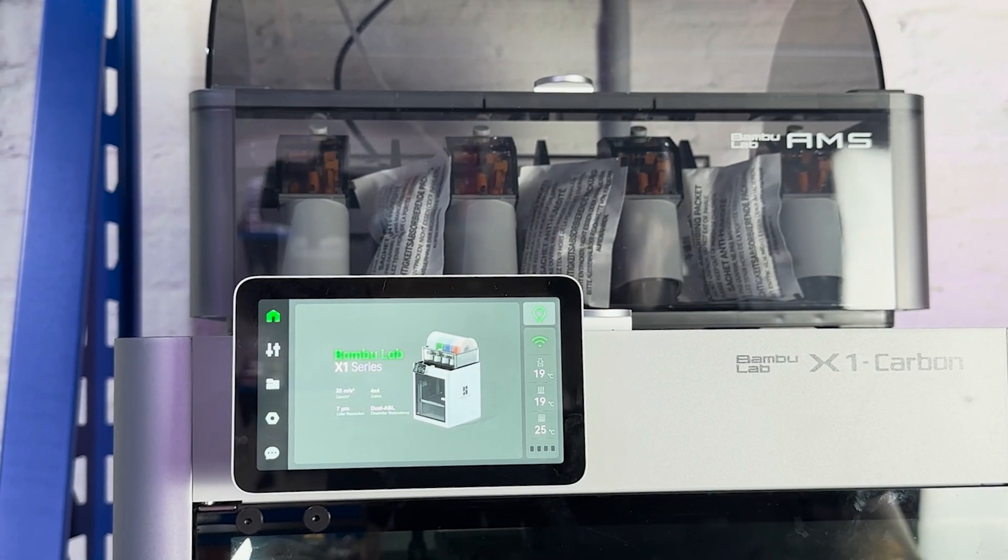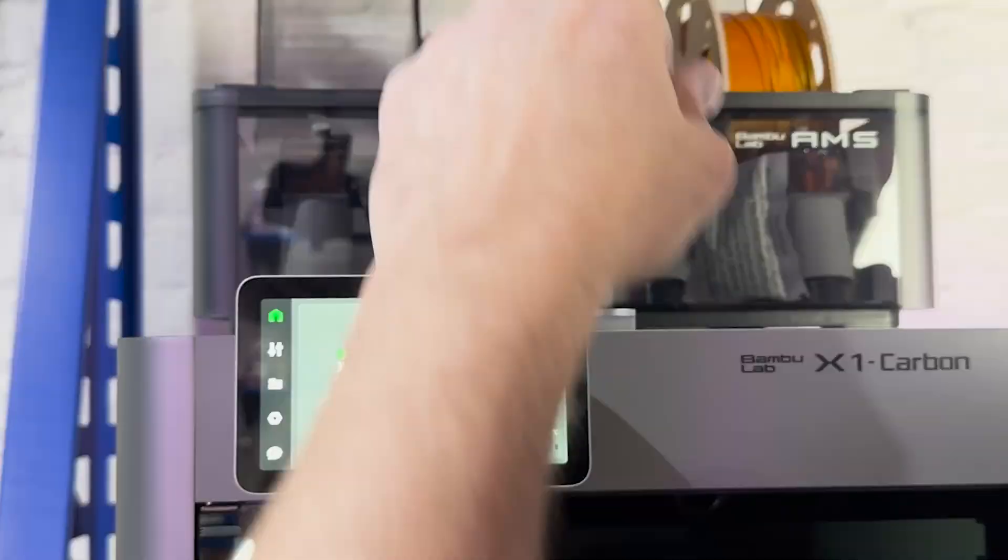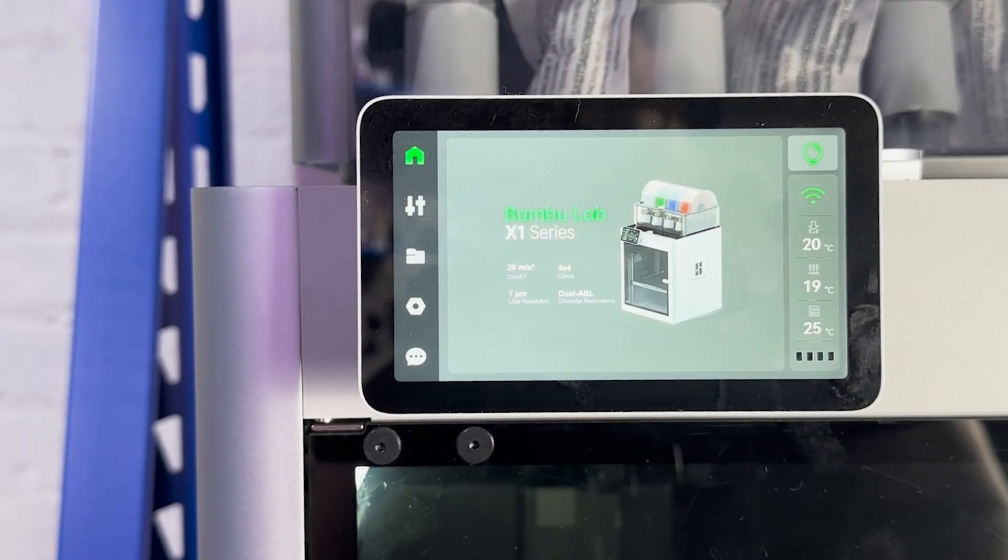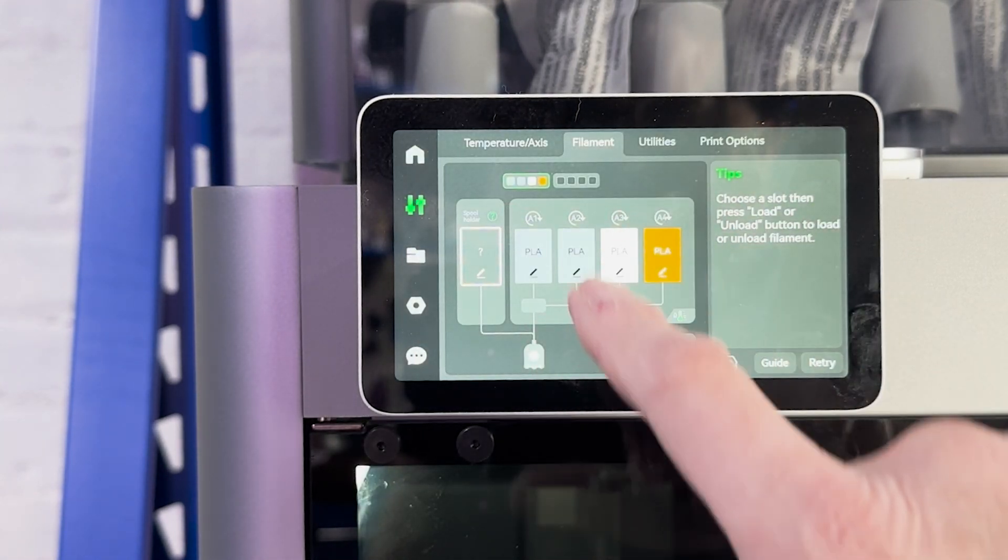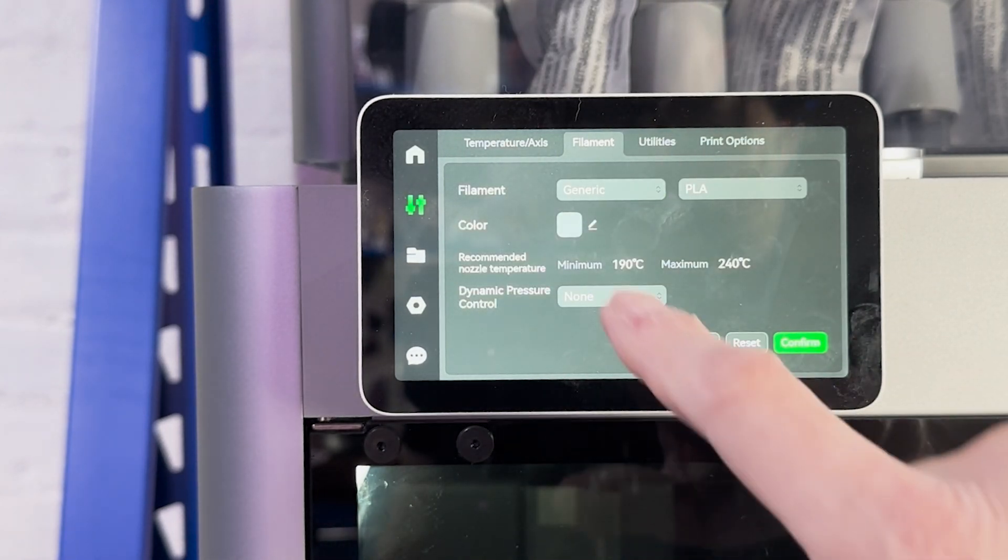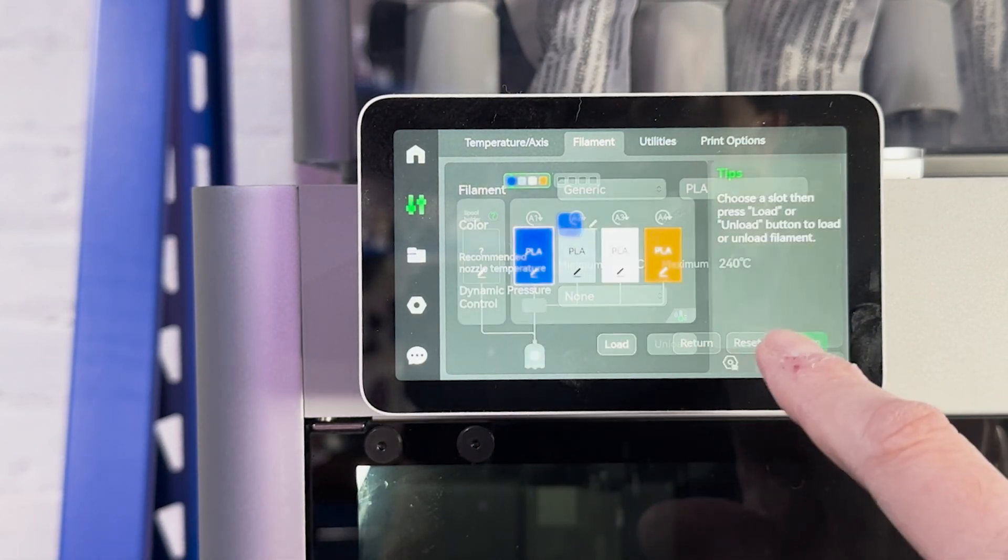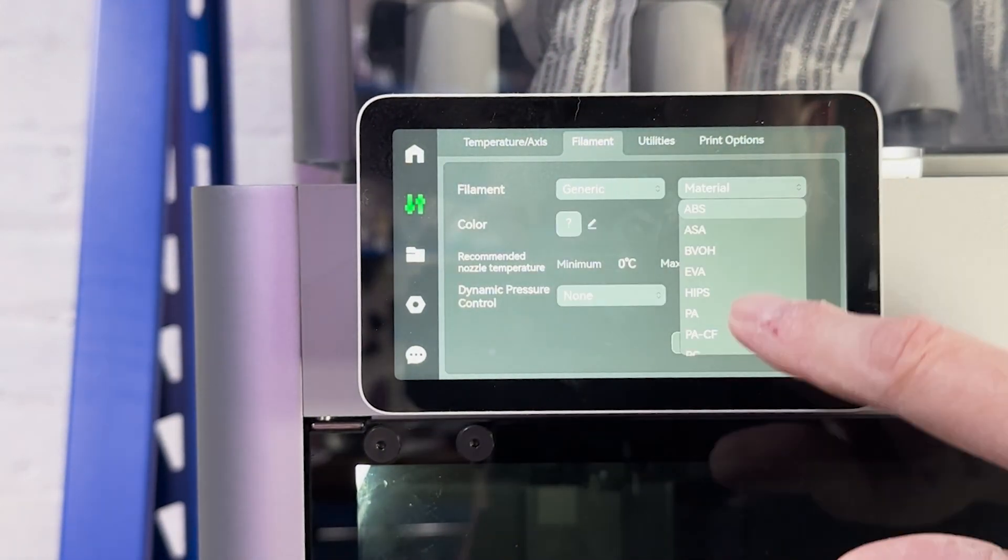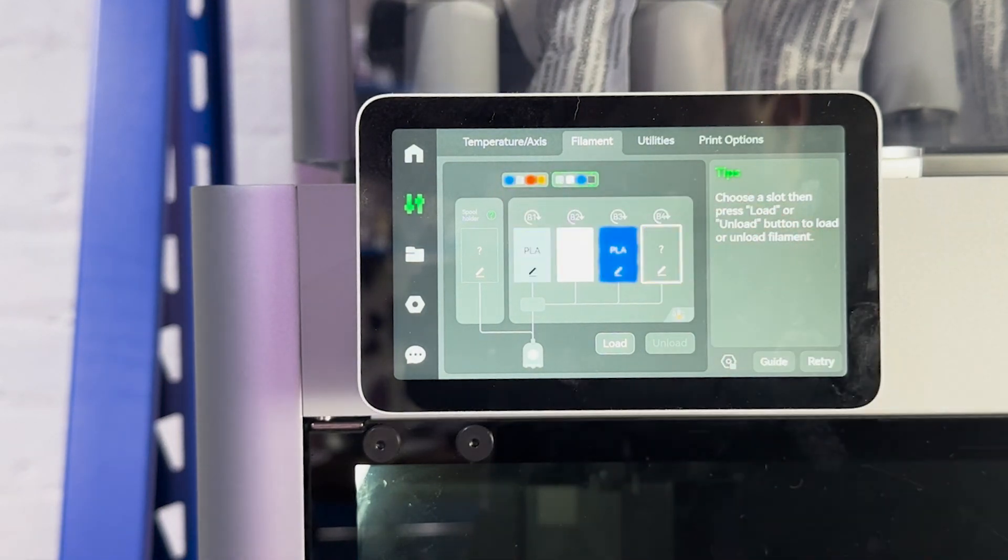Now let's get our filaments loaded. Now that everything's loaded into the AMSs, we could go into our unit themselves. And we could see here, we have our two AMS systems. So we're just going to load everything up with what's in there. This is generic PLA, and it is blue. Confirm. Now as you can see here, we have all our colors selected. You could also assign all your filaments inside the Bamboo Labs app.